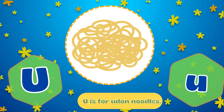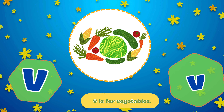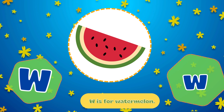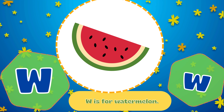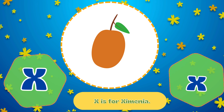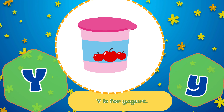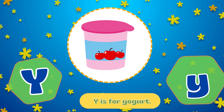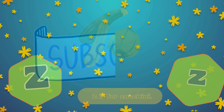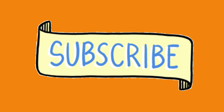U is for Udon Noodles. V is for Vegetables. W is for Watermelon. X is for Ximenia. Y is for Yogurt. Z is for Zucchini. We'll see you next time.